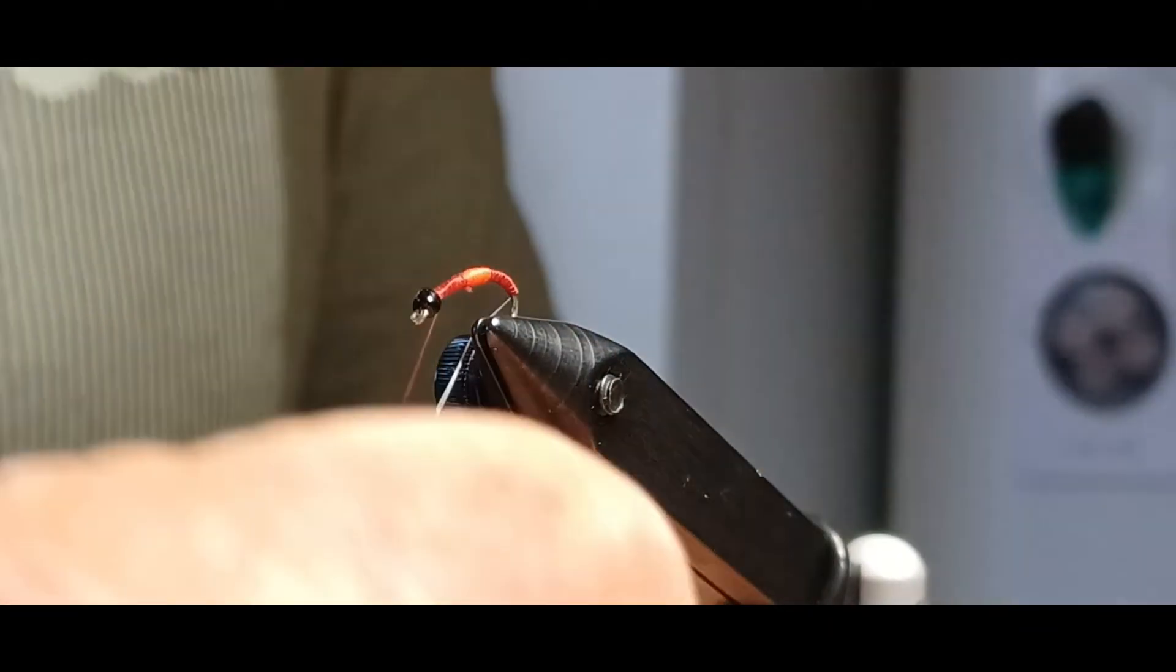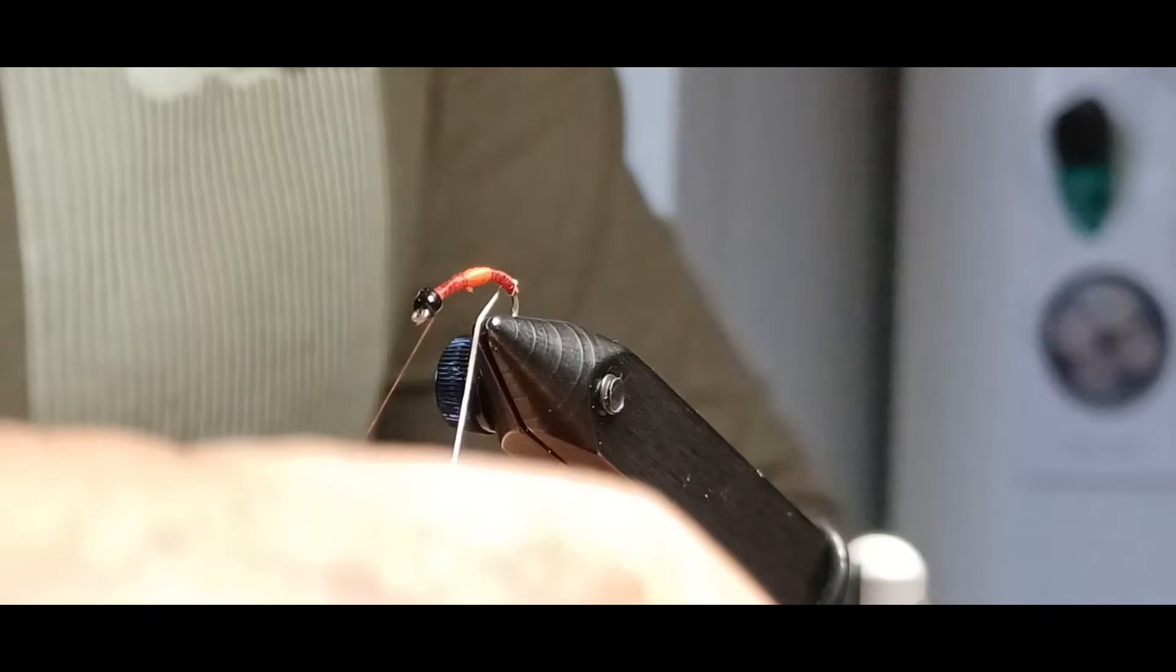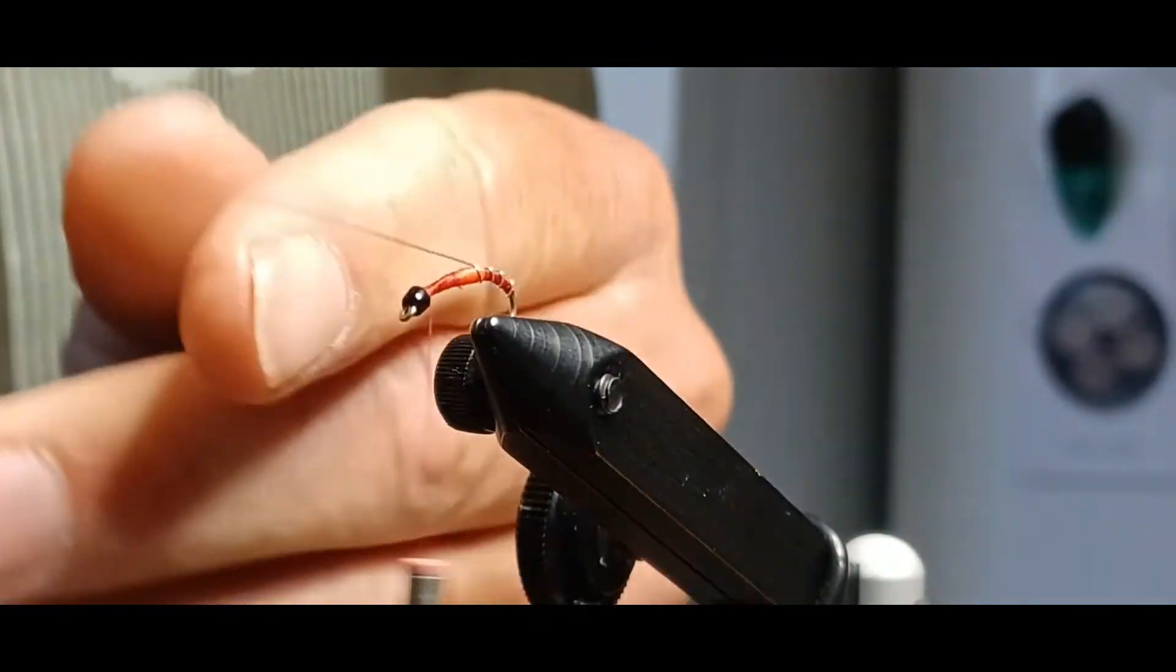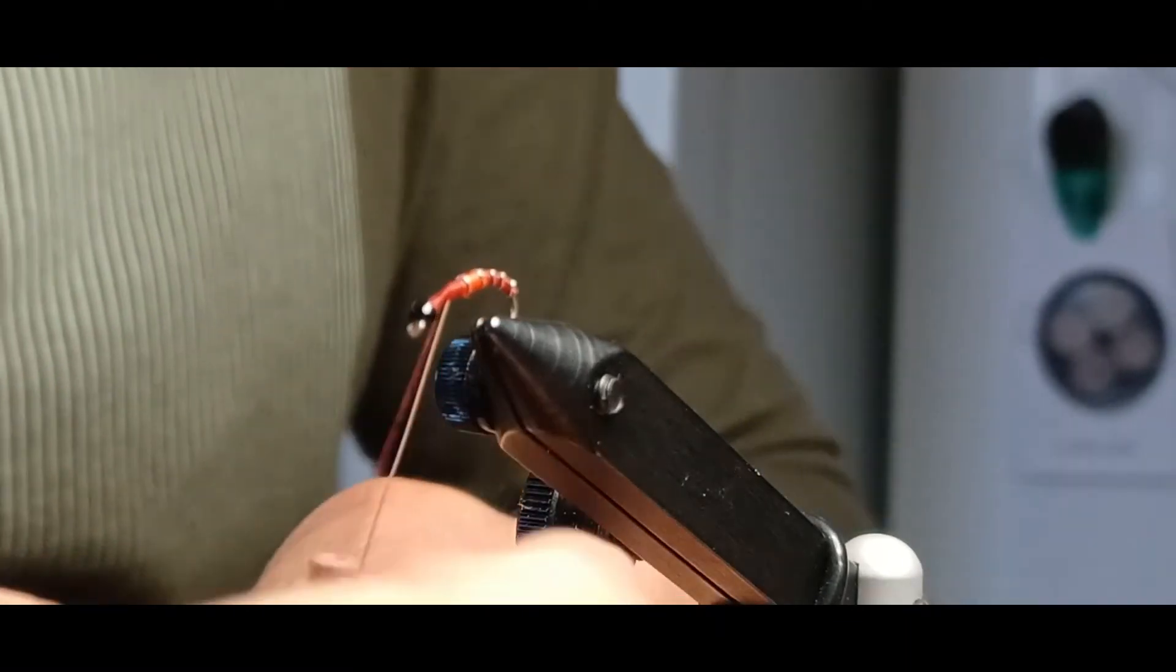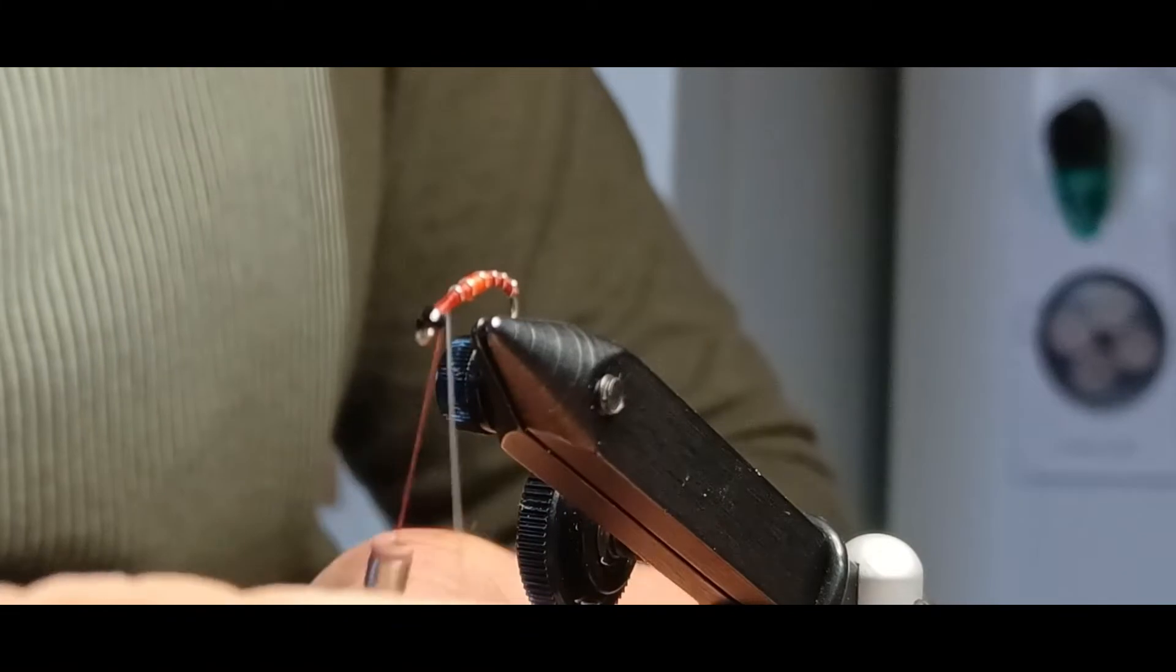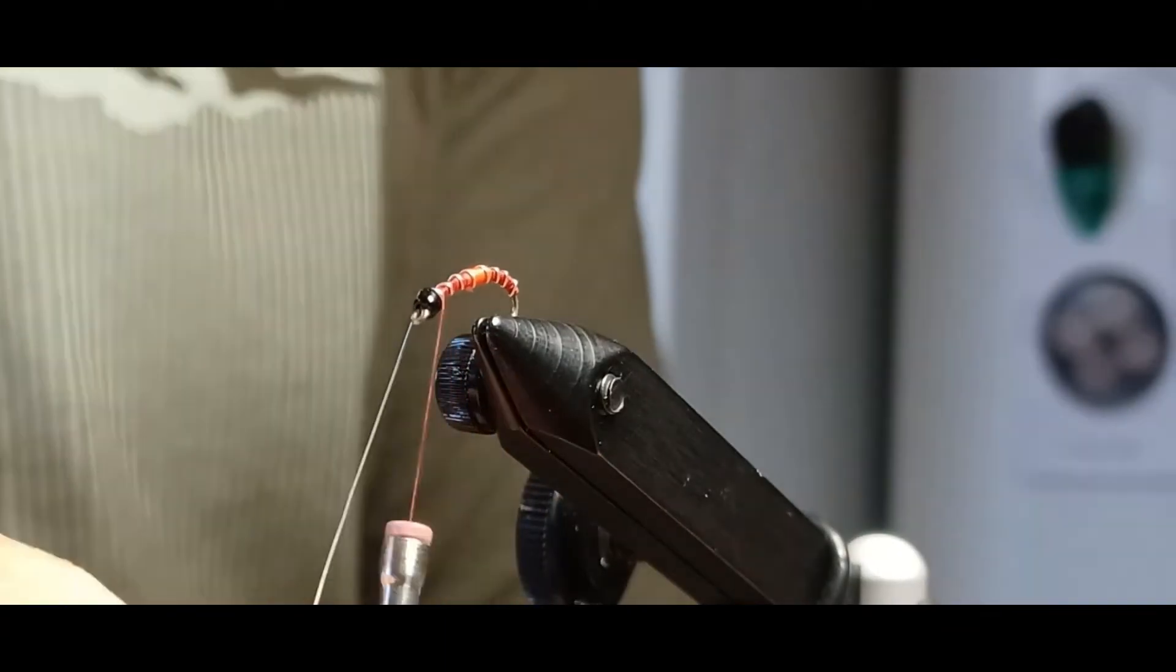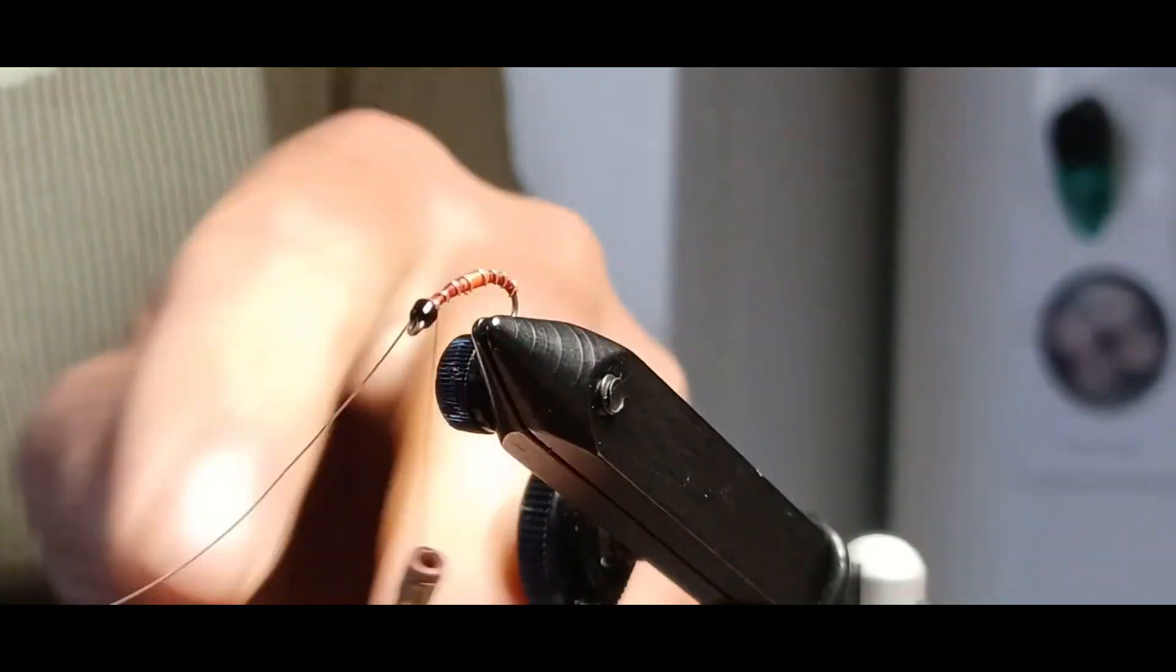Now we're going to start our counter wraps with our wire. Trying to go five to seven wraps, evenly spaced around there, because this adds a little bit more weight to the fly and just a little bit more shiny attraction to the pattern. We get that wrapped around there nice and even. It doesn't have to be even. It's just got to be wrapped around there. And then it's secured.